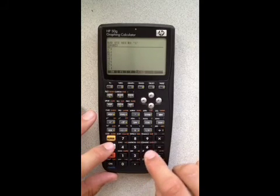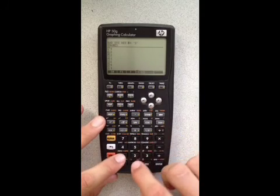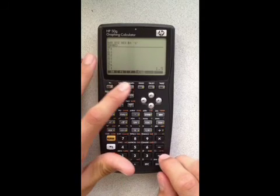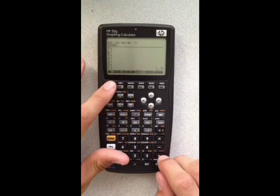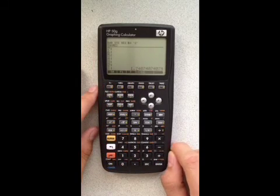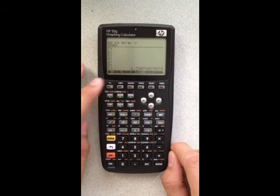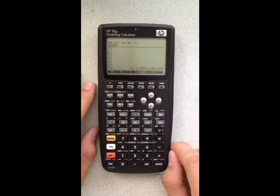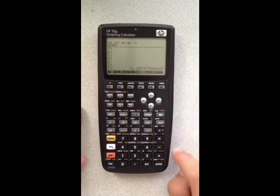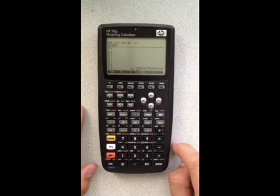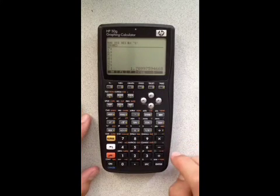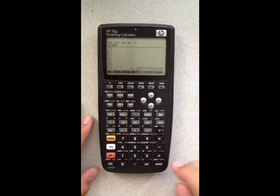Enter. And now since we have the function, function prime, and Newton's method, Newton's method uses these two. So now we can just hit Newton's method, and it approximates our first guess. If we want to get closer, we hit it again. It approximates our next guess. And we keep hitting it until it levels out, and we can see that it goes to 1.7099 and all that business. And yeah, so that's how you use it.